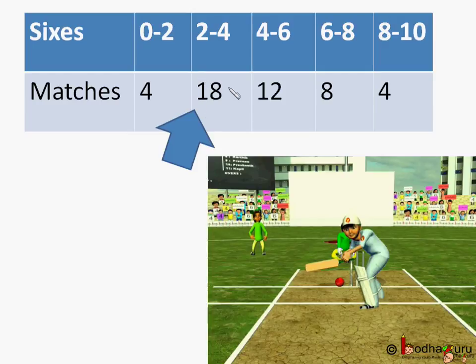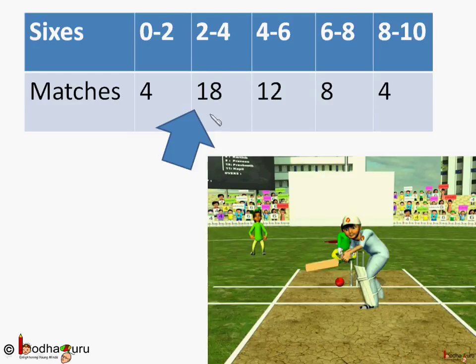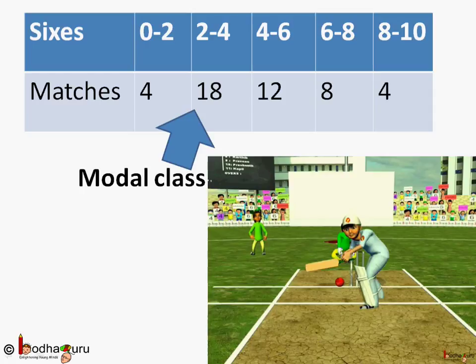From the data, we can say 2-4 sixes were hit most of the time. So, the mode of the data, that is the most frequently appeared number, is supposed to be in this class. We call this modal class. 2-4 is the modal class.